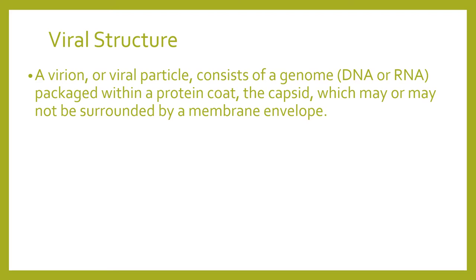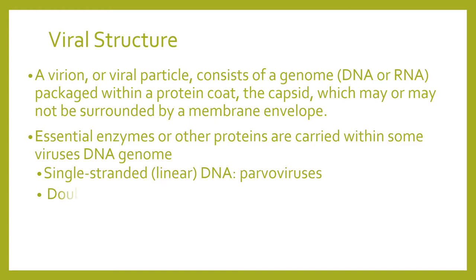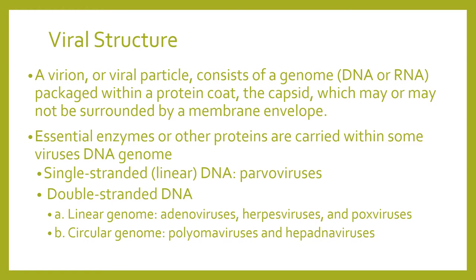For a review of viral structure, a virion or viral particle consists of a genome, which can be either DNA or RNA, packaged within a protein coat called the capsid, which may or may not be surrounded by a membrane envelope. Essential enzymes or other proteins are carried within some viruses. DNA genomes can be single-stranded or linear, such as parvoviruses, or double-stranded linear like adenoviruses, herpesviruses, and poxviruses. Another type is the double-stranded circular genome, which includes hepadnaviruses and hepatitis.